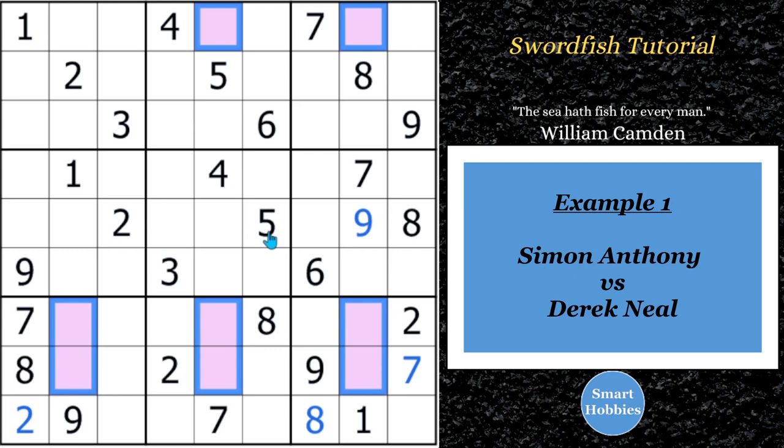So for our first example, this is a classic Sudoku that Simon Anthony solved against Derek Neal. And I have all the links to all the puzzles and videos in the description below. I want you to look at these purple cells, the purple highlighted cells. What they represent is where a three can go in columns two, column five, and column eight.